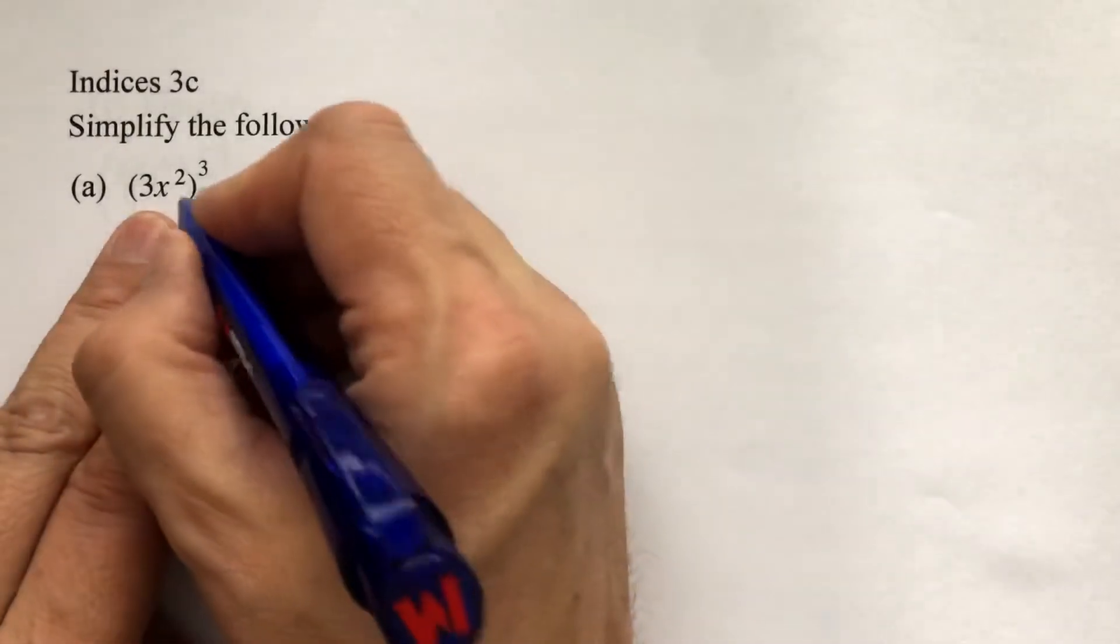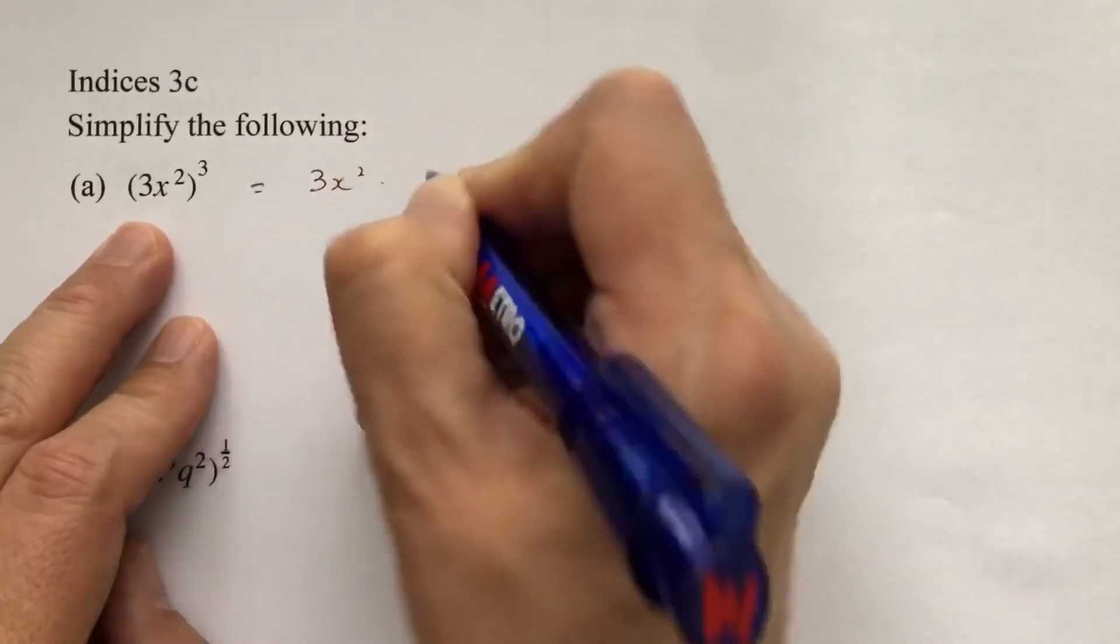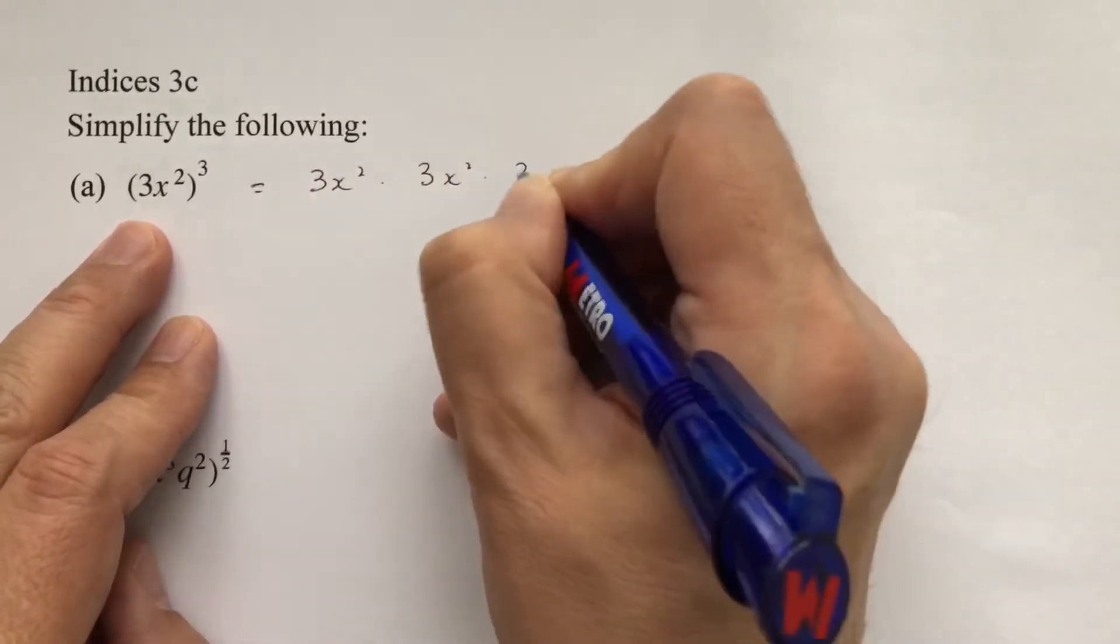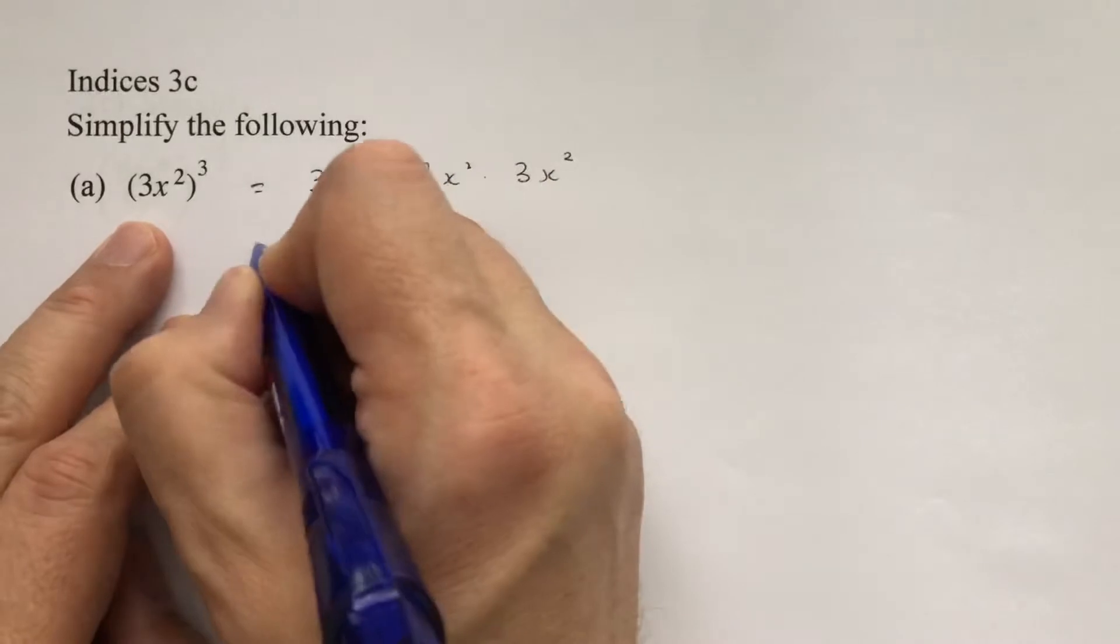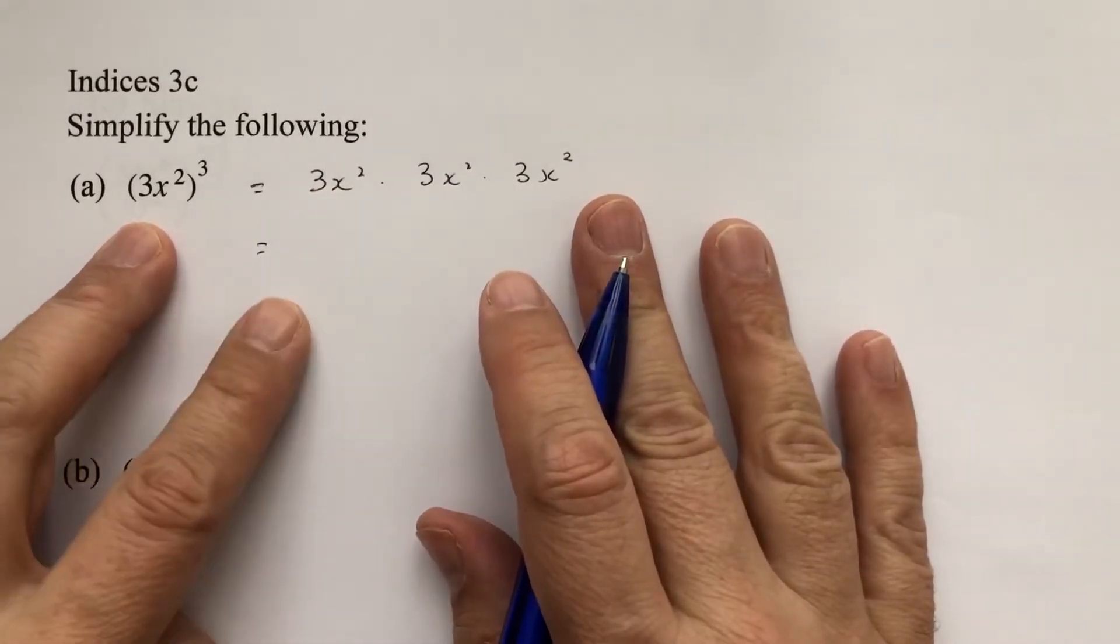So with this question we've got 3x squared cubed. So this is 3x squared times 3x squared times 3x squared. Again, you don't really want to write this step, I'm just saying it for your understanding.